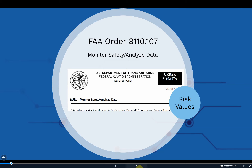As mentioned above, Order 8110.107 provides the FAA process for monitoring safety and analyzing data, which was designed to promote an improved Continued Operational Safety (COS) methodology by incorporating a data-driven, risk-based approach for safety assurance and safety risk management. It's intended to support aviation products throughout their life cycle. Though our evaluation teams don't have the same names, we're still effectively working in a similar manner, using data to determine the safety risk associated with an in-service issue.